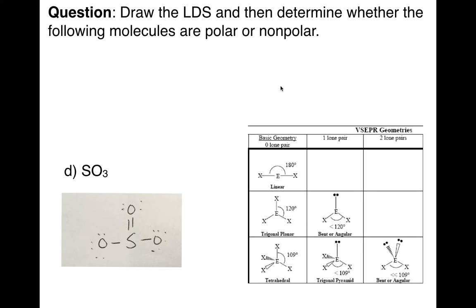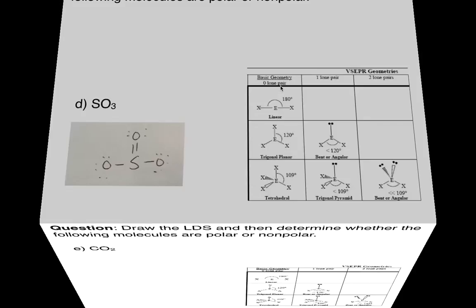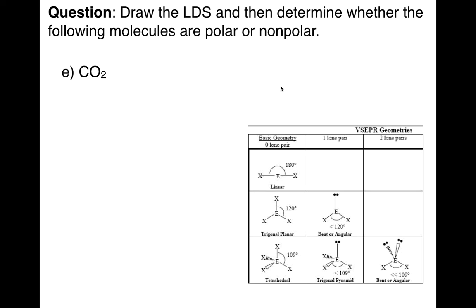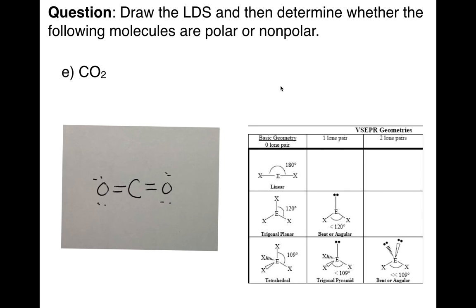If you were to draw SO3 three-dimensionally, the oxygens would be pulling in all directions equally, so that means non-polar. Next: CO2. Hopefully you know by now that CO2 has two atoms around the central atom and no lone pairs of electrons — that means it is linear, and that means we have a non-polar geometry.